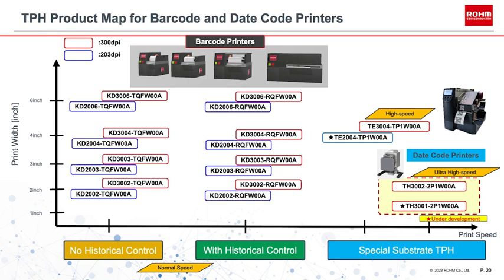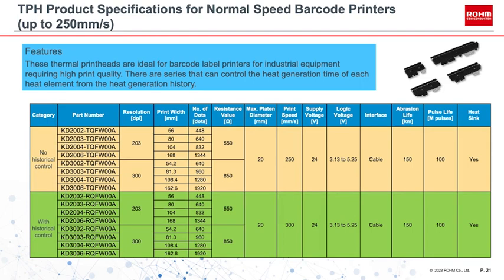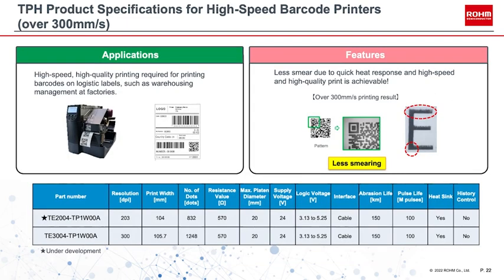These use Roam's proprietary substrate materials to achieve high-speed printing with extreme durability. The normal-speed barcode printer lineup ranges from 2 to 6 inches, all with the same structure — products in yellow for customers that control history themselves, and those in green with a built-in history control function. For high-speed barcode printers, logistics labels require high print quality even at speeds above 300 millimeters per second, with print speeds up to 500 or even 600 millimeters per second possible.